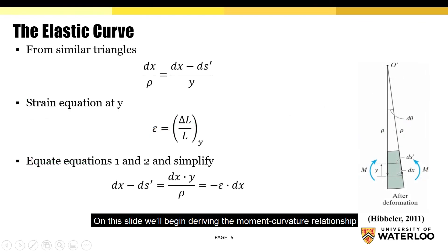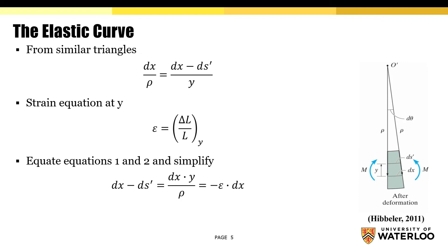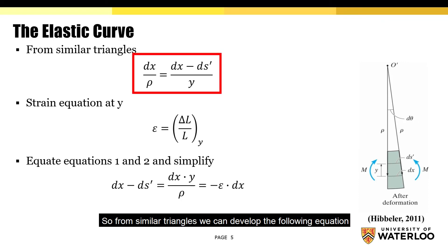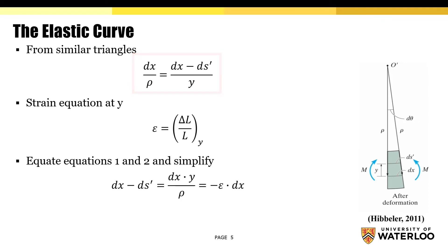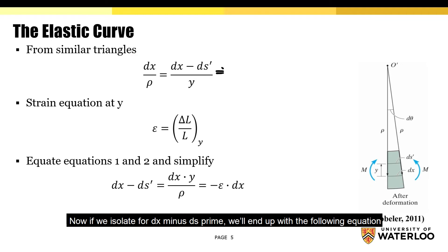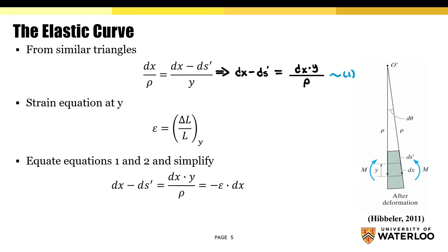On this slide, we'll begin deriving the moment-curvature relationship. So from similar triangles, we can develop the following equation. Now, if we isolate for dx minus ds', we'll end up with the following equation. We'll label this equation as equation 1.